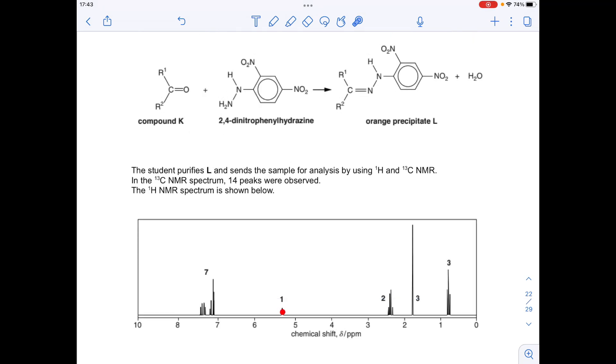So moving on to this signal here. So this is a singlet, so we've got no adjacent hydrogens, we could say that. It's got an area of 1, so there's 1 hydrogen in the environment. Now, the shift, there's three possible options. There they are there. But because we've definitely got an NH there, I think it's safe to say that that signal there is due to that H bonded to that N.